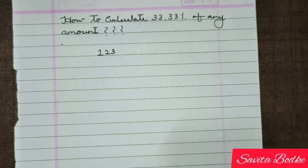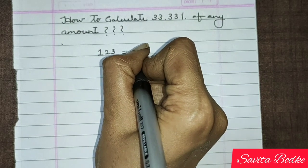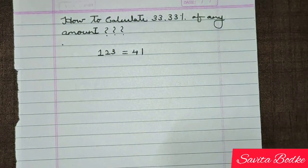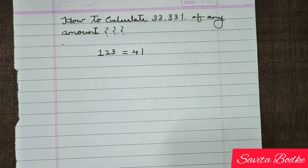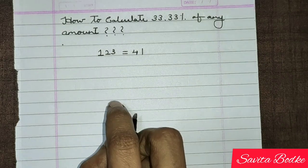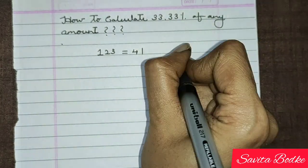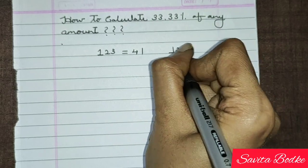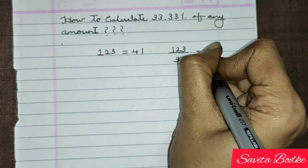Now what I have done? It's so simple. Just divide this amount by 3. Means what I have done: 123 divided by 3. So you will get the 33.33 percent of this amount, that is nothing but 41.